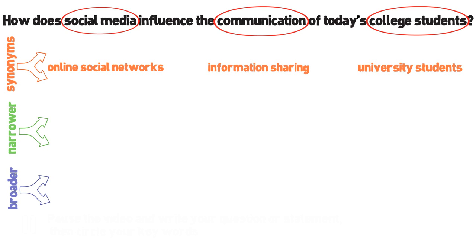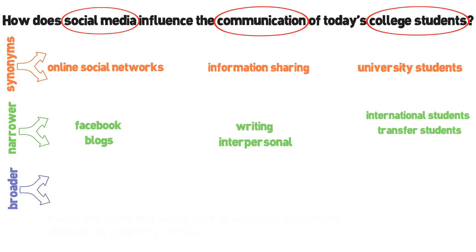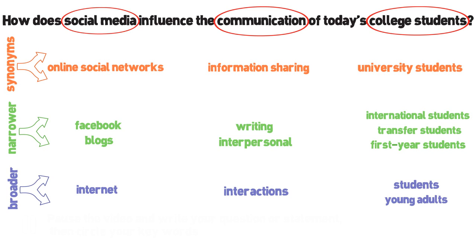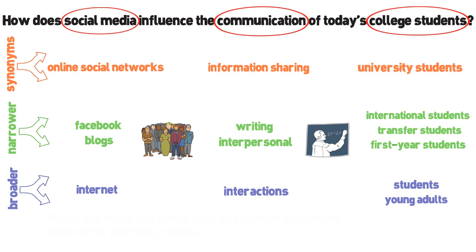Once you have your synonyms, write narrow words under each concept. Underneath those, write broader words for your key concepts. If you are having trouble coming up with different keywords, try brainstorming with friends and classmates or your instructor.